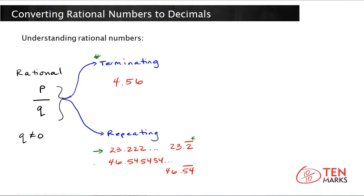Here's another scenario where you have the digits 5 and 4 in a sequence repeating over and over again. You put the bar over the sequence that repeats to let the viewer know that 54 will continue on forever after the decimal place.